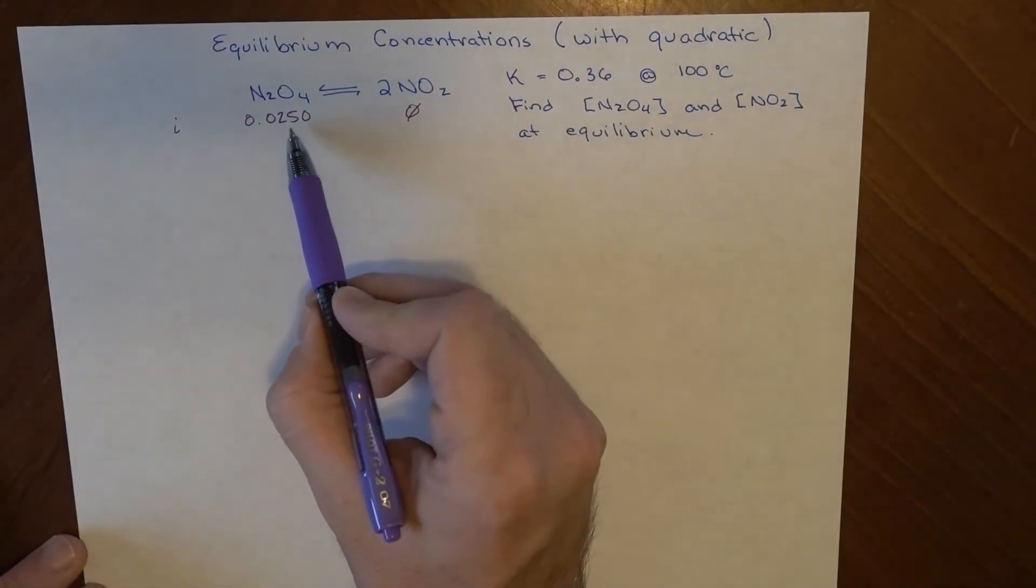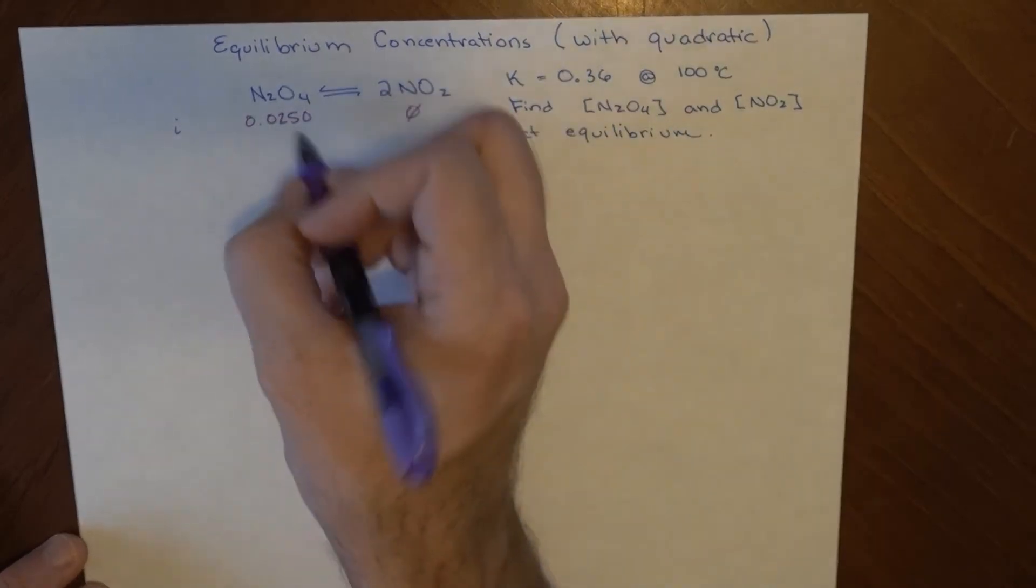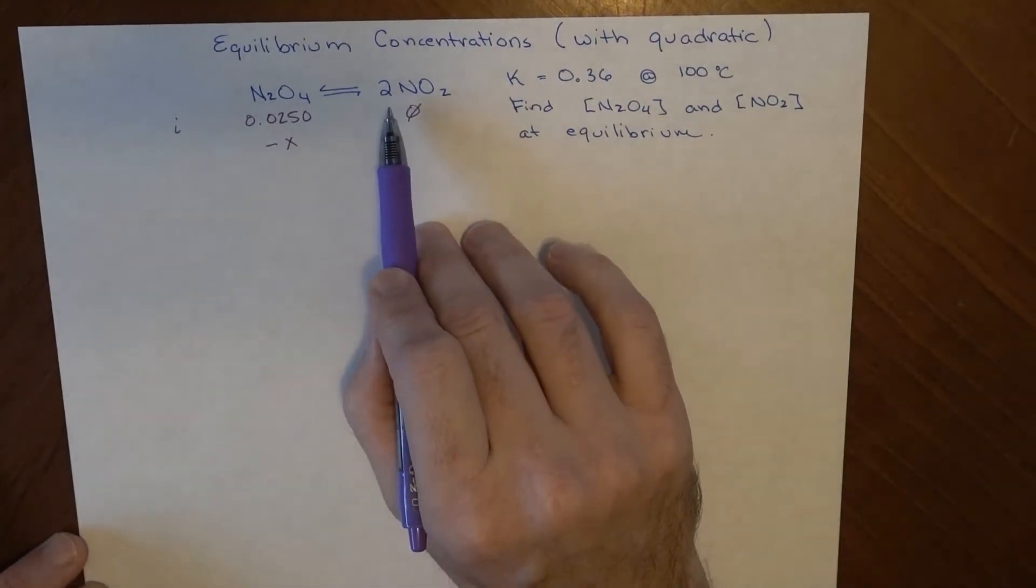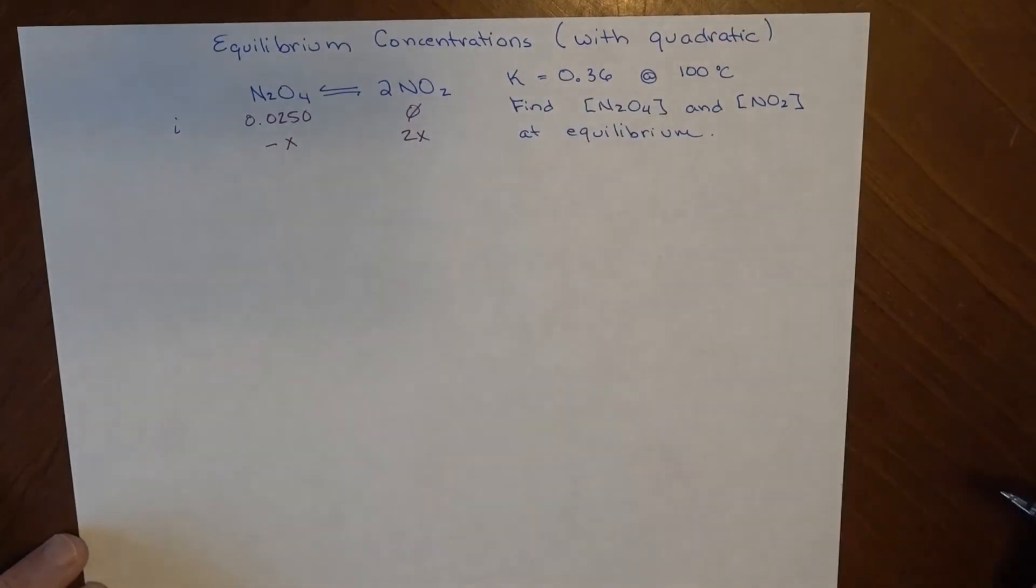So when this much is put in, and there's none of this, this system moves towards equilibrium with the K value of this, so some amount of this goes away, and because there are 2 moles of this formed for every 1 mole of this that goes away, this much of it ends up being formed.